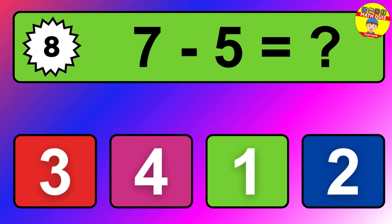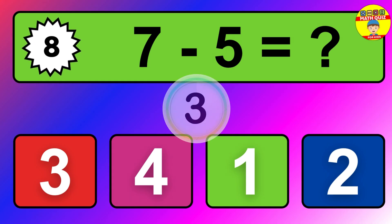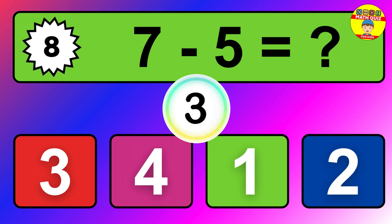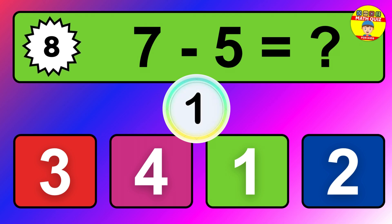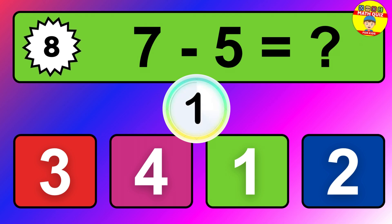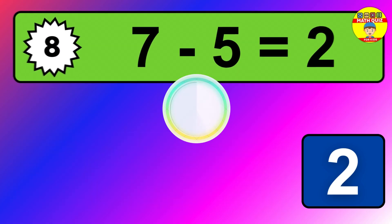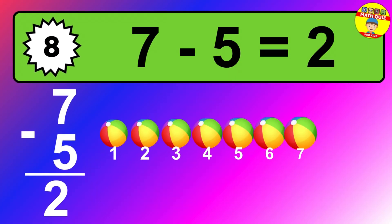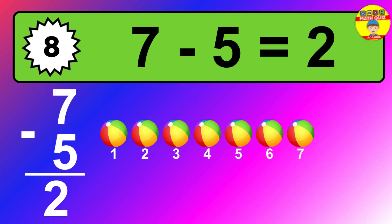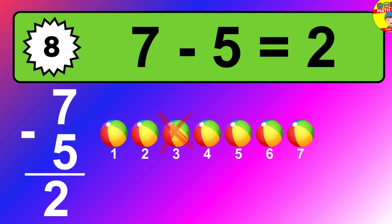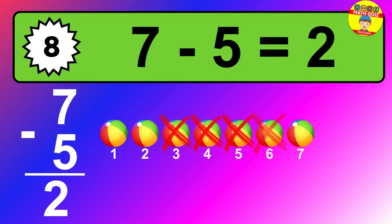Question 8. 7 minus 5 equals what? So the answer is 7 minus 5 is 2. Let's count it. 1, 2.